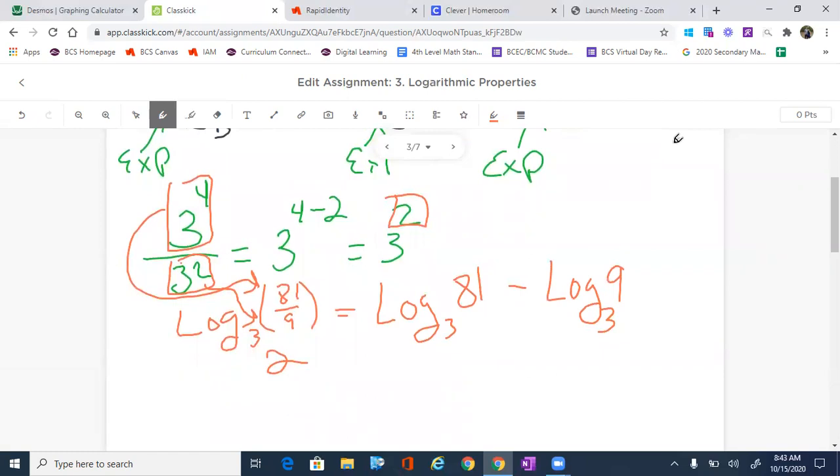Okay, so remember that this statement, when we're talking about logs, it is just finding exponents all the way across. So this is the same thing as writing 3 to the x equals 81. And this one is simply saying 3 to the x equals to 9.